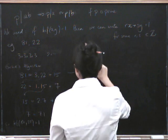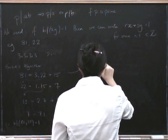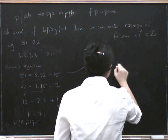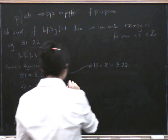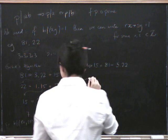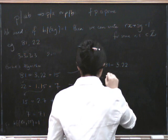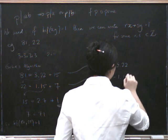Let's start with this line. This line gives us that 15 equals 81 minus 3 times 22. Okay? So now let's try this line. This line gives us that 7 is 22 minus 1 times 15.